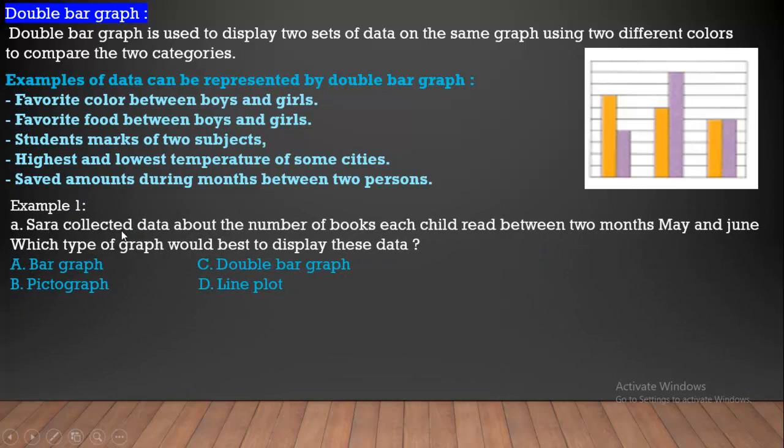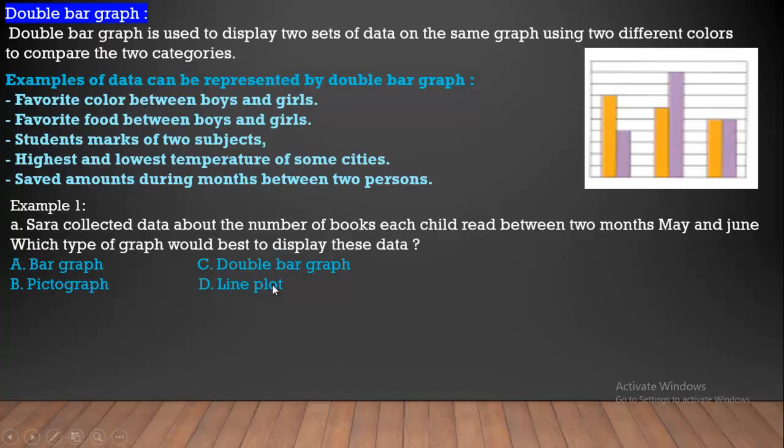Let's take an example. We have collected data about a number of books each child reads between two months, May and June. Which type of graph would be? We have here child reads between two months, May and June. So we have a double bar graph.